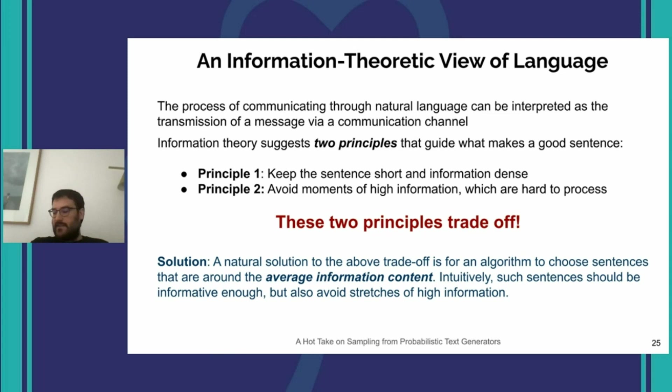I'm going to propose a solution and argue for it intuitively. Our goal is to have an algorithm that selects sentences that are around the average information content. Intuitively, if an utterance is around the average information content locally, it should be relatively information-dense — around average — but also avoid moments of high information.